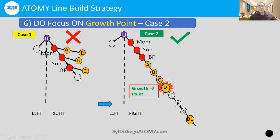Suddenly, person D decides they really love the products and they're sharing with their friend. They're going to register this person D1. They're really excited, using more products, and they're going to register D2 — because it's always a great idea to put those two people on the same line you came into and grow the power line. You've taught them that, and D is following this principle.